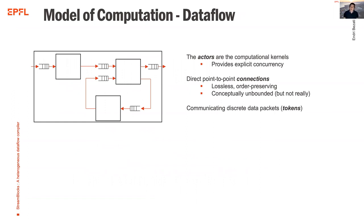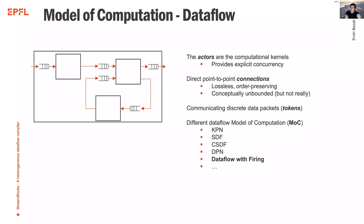Another model of computation is Dataflow. With Dataflow, you split the computation across actors, providing explicit concurrency. Communication happens only by point-to-point connections, which are lossless. Data items are called tokens. There are different flavors: Kahn process networks, static models like synchronous and cyclo-static dataflow, more dynamic models like Dataflow Process Networks, and the one we use — Dataflow with Firing — which is on top of DPN.